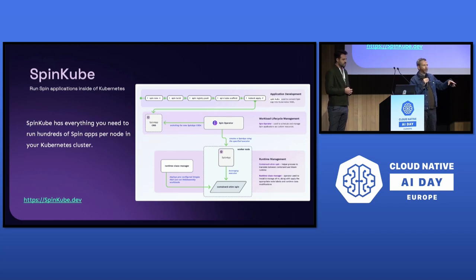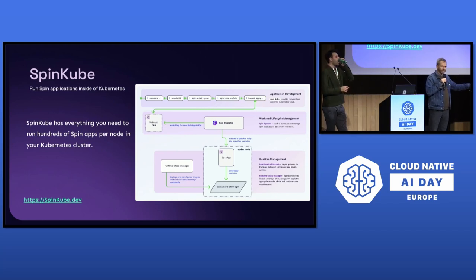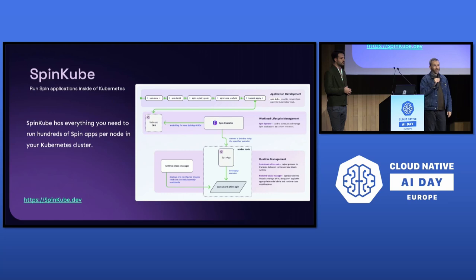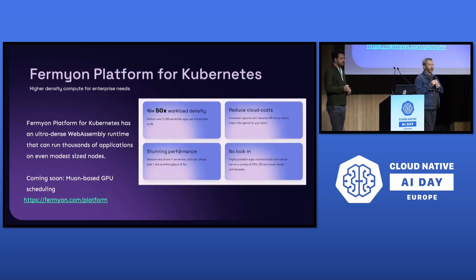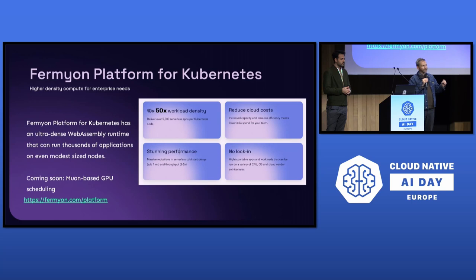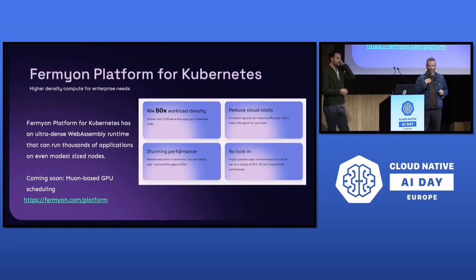SpinCube is a toolset that allows you to run these kinds of serverless workloads inside of any Kubernetes cluster — whether it's something large like AKS or something tiny like K3S. You can run WebAssembly workloads and achieve really impressive density and scalability. We also announced an enterprise version called Fermion Platform for Kubernetes, which is designed for highly scalable workloads and comes with the GPU scheduling software used inside Fermion Cloud — allowing you to schedule GPU time in very fine-grained increments.